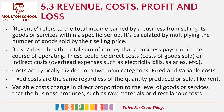Let's now look at section 5.3: revenue, costs, profit and loss. Revenue is the total income earned by a business from selling its goods and services. You calculate that by multiplying the number of goods by the selling price. Revenue costs is the total sum of money that a business pays out. You've got direct costs — the costs of making the good — and indirect costs, those things that have to be paid whatever, such as salaries and electricity bills.